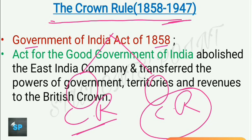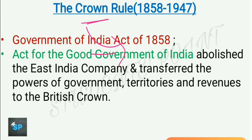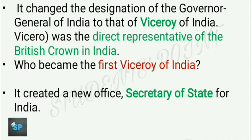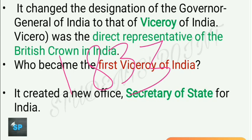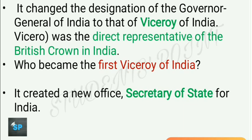The Government of India Act 1858, also called the Act of Good Government of India, abolished the East India Company and transferred powers to the British Crown. It changed the designation of Governor General of India to that of Viceroy. The Charter Act of 1833 had changed the designation from Governor General of Bengal to Governor General of India, and this 1858 Act then changed it to Viceroy, who was to be the direct representative of the British Crown in India.